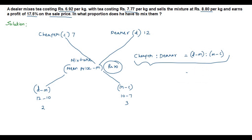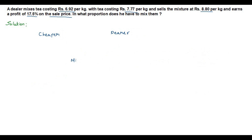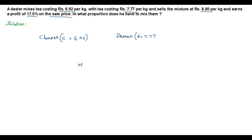Now let us apply this concept to our problem. All three — cheaper, dearer, and mixture — must be in cost price. The cost price of cheaper c is 6.92 and the cost price of dearer d is 7.77. We need to find the cost price of the mixture m. Since only the selling price of the mixture is known, we have to find the cost price from the selling price using the profit percentage.